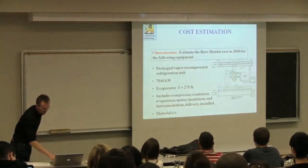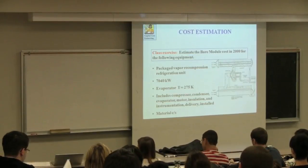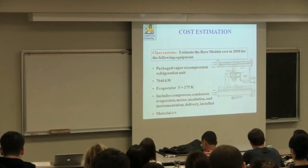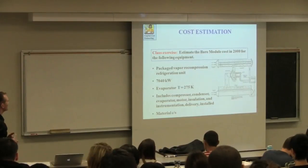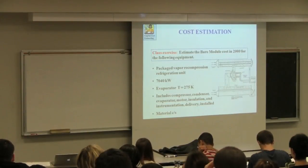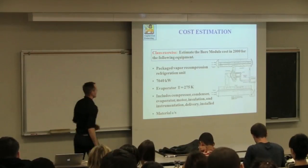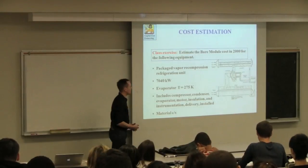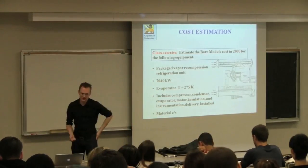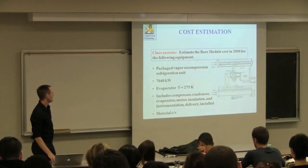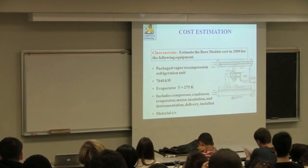And Thursday's class will also be a summary of the economic section. And we'll move on to safety on Friday. But what I'd like you to work on next is this particular problem. Estimate just for the next five minutes or so. This one should be relatively straightforward as well. But there's some interesting concepts that come in. So I just wanted to cover this example. Estimate the bare module costing in 2000 for the following unit. This is a package vapor recompression refrigeration unit. It's a chilling unit. With heat exchange capacity 7,040 kilowatts. The evaporator in this unit is operating at 275 K, so just above zero degrees. And it's fully, it's a full unit, including the compressor, condenser, motor, insulation, delivery, everything fully installed, made of carbon steel.